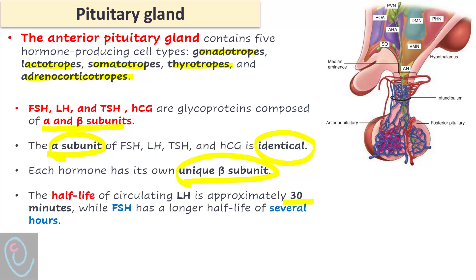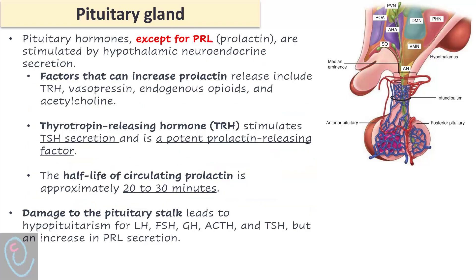The half-life of LH is 30 minutes, while the half-life of FSH is several hours. All hormones secreted from the anterior pituitary are stimulated by hypothalamic hormones, except prolactin, which is inhibited by dopamine. Certain factors can increase prolactin release, including TRH, vasopressin, endogenous opioids, and acetylcholine. TRH specifically stimulates TSH secretion and is also a potent stimulator of prolactin release — this explains the relationship between hypothyroidism and hyperprolactinemia.